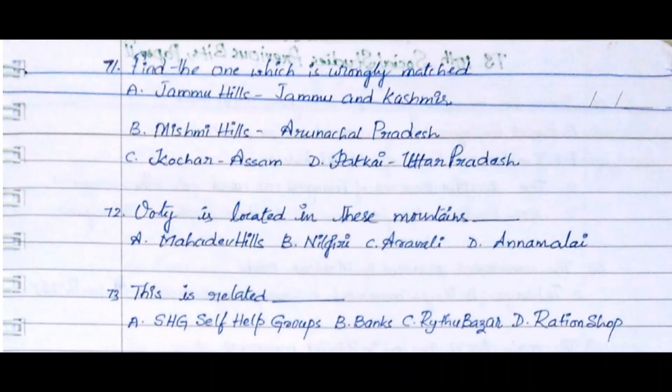Question 73: This is related to PDS — Public Distribution System. Option A. SHG — Self-Help Groups, Option B. Banks, Option C. Raith Bazaar, Option D. Ration Shop. The answer is Option D. Ration Shop.